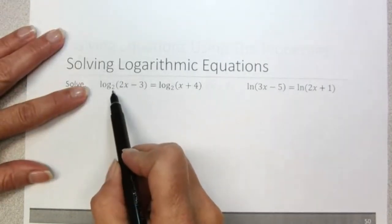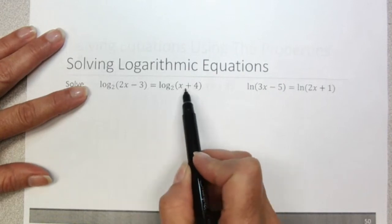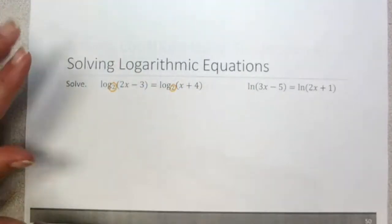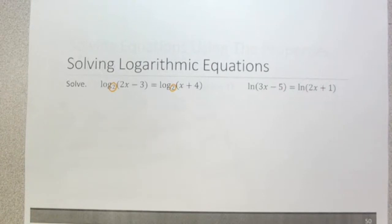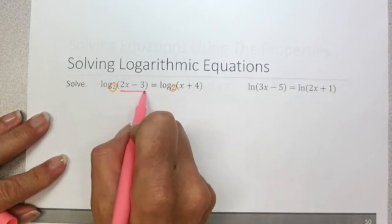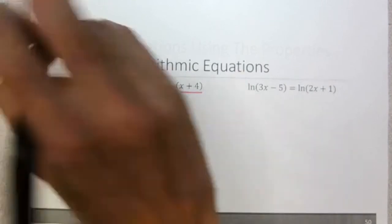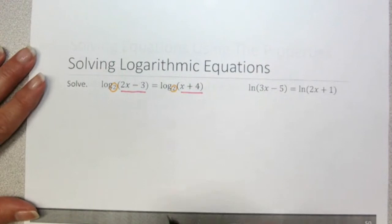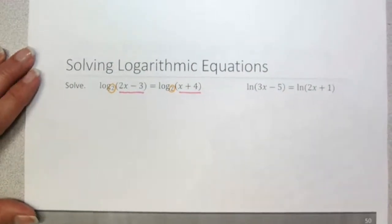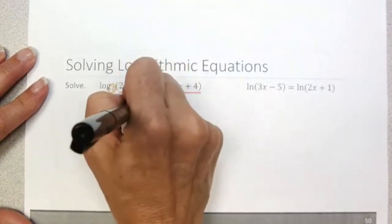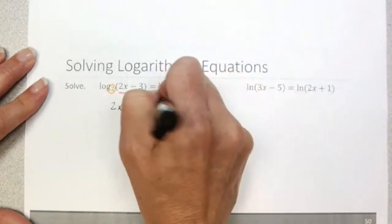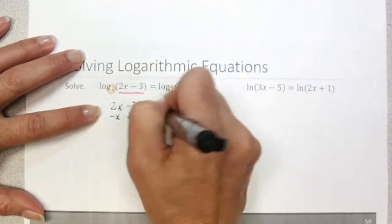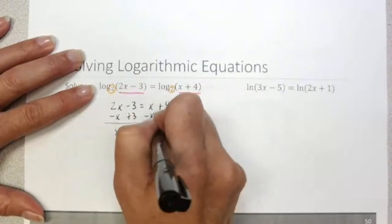In this first example, we have log base 2 of (2x minus 3) equal to log base 2 of (x plus 4). Since the bases are the same — both base 2 — and we have one log equal to one log, the arguments must be equal by the one-to-one property. So 2x minus 3 equals x plus 4. Subtracting x from both sides and adding 3 to both sides, we find that x equals 7.